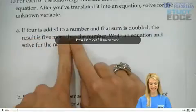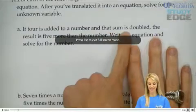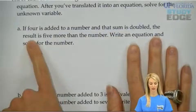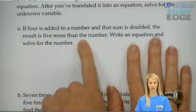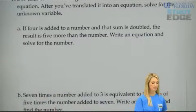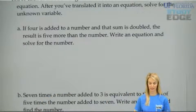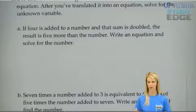If four is added to a number, and that sum is doubled, the result is five more than the number. Okay, some key words are really popping out at me. Let's see if they're the same ones popping out at you.